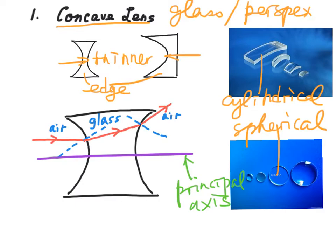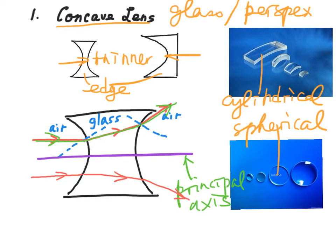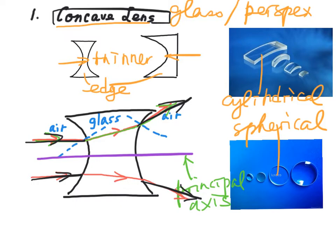When a light ray travels in a direction parallel to the principal axis, due to refraction, the light ray will bend in a direction away from the principal axis. Similarly, another light ray parallel to the principal axis will also bend away from the principal axis after passing through the lens. Since incident parallel light rays will eventually diverge after passing through the lens, therefore a concave lens is also called a diverging lens.